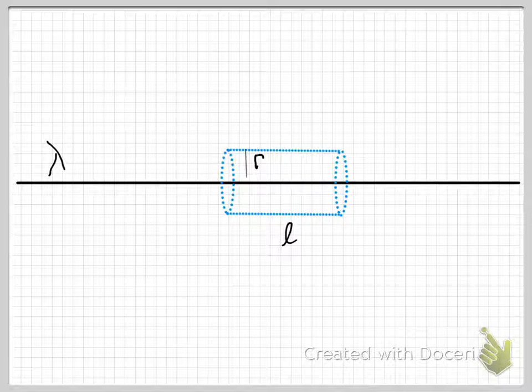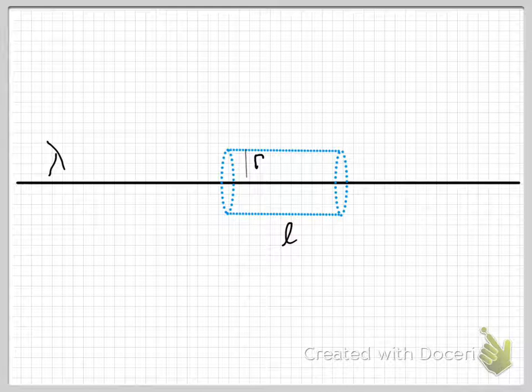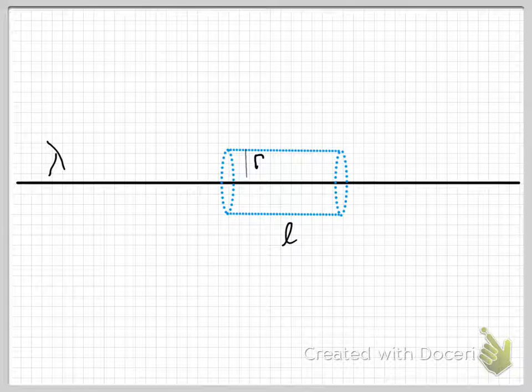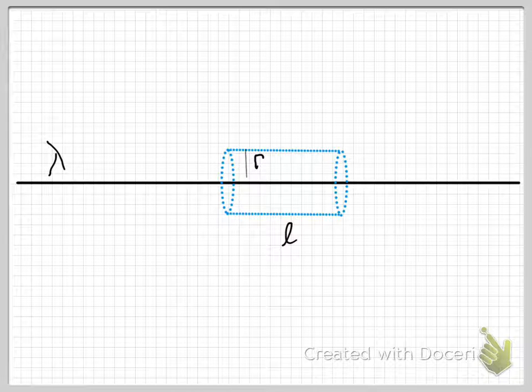You can imagine that if your non-infinite line of charge is something like an insulated wire that's been charged, and you're a small ant on that wire, to you that looks pretty infinite. So this is actually a pretty useful calculation as well as being instructive on how to use Gauss's law.